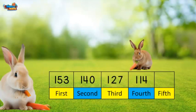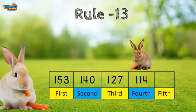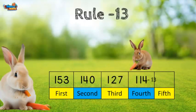This pattern is showing the rule minus 13. We need to find the digit that goes in the fifth position. We subtract 13 from the digit in the fourth position. 114 minus 13 equals 101.